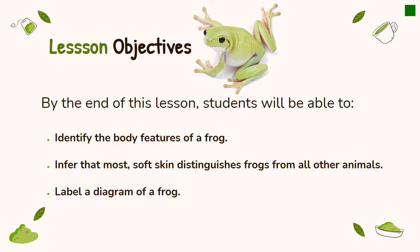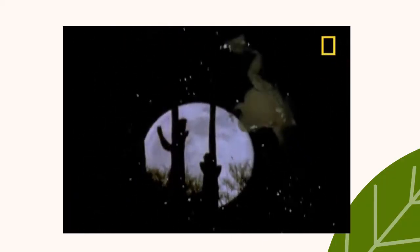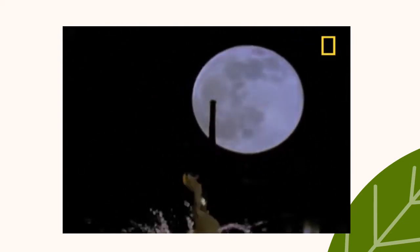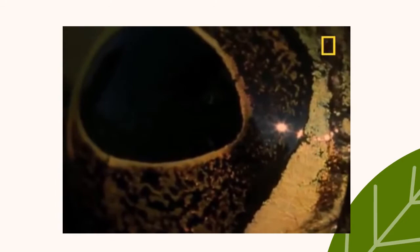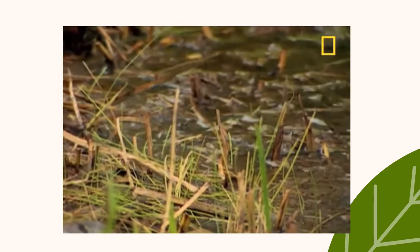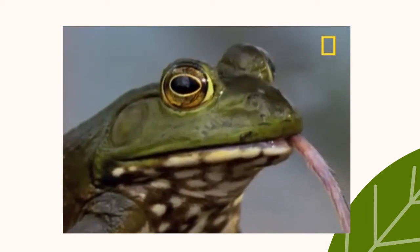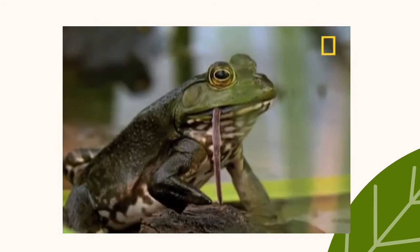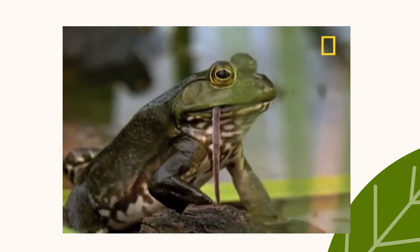Contrary to popular opinion, frogs aren't just selective eaters feasting only on flies. Take the bullfrog for example — they'll eat spiders, scorpions, rodents, snakes, fish, and just about anything else that passes in front of them. But how do they manage to be such eating machines?